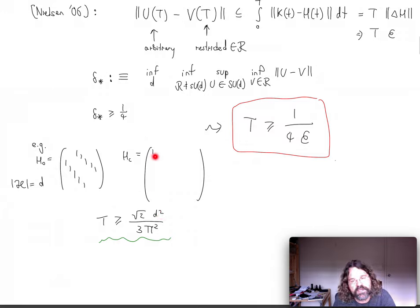Roughly speaking, in this kind of nearest neighbor model, you would expect by Lieb-Robinson arguments that the control time scales at least linearly with the dimension. But the quadratic dependence is something that we observed numerically, and it seems to be fairly tight.